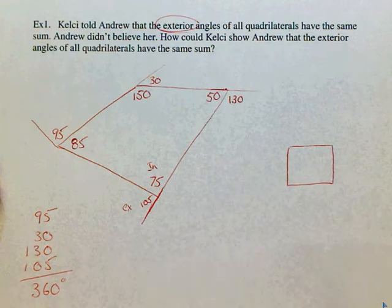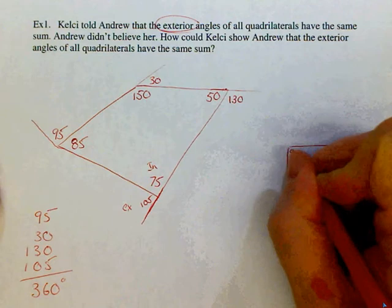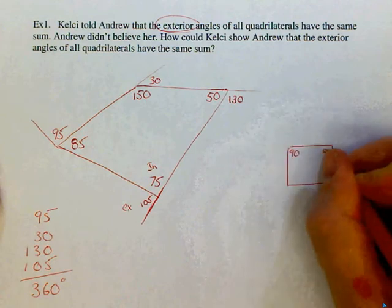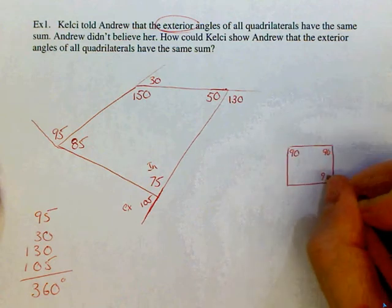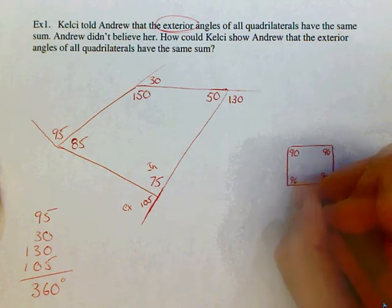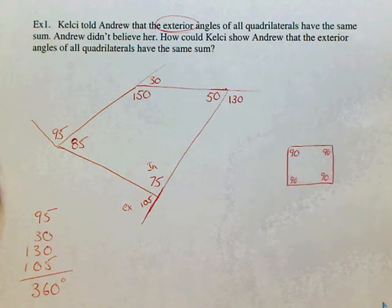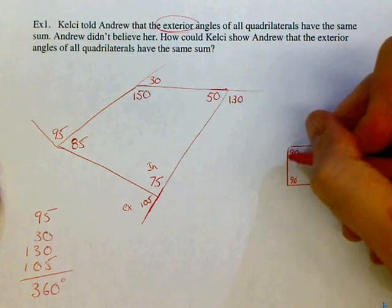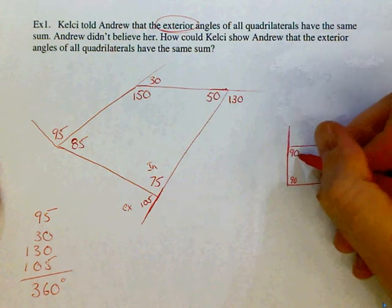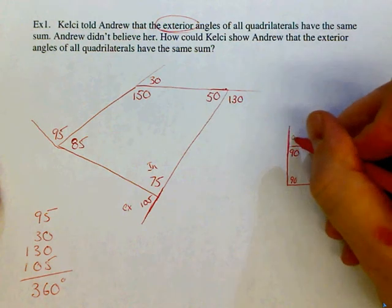So the sum of our exterior angles was 360. Let's go to our square. We know that the interior angles of a square are all 90. Again, let's begin to get some exterior angles. I'll extend this line. If this is 90, this must be 90. I'll extend this line. If this is 90, this must be 90.